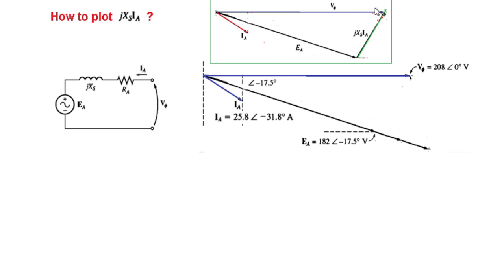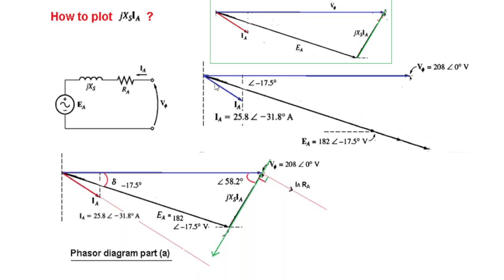What remains is the element X_s * I_a on the phasor diagram. The technique is: at the end of the V_phi phasor, we draw the current line. From that end point, we draw I_a * R_a in phase with I_a, since resistive voltage drops are in phase with current. Then, since the inductive component has a 90-degree phase difference, we draw a 90-degree line from there, and wherever it intersects gives the end point of X_s * I_a. This completes the phasor diagram for part A.